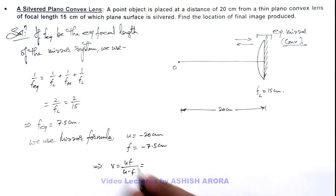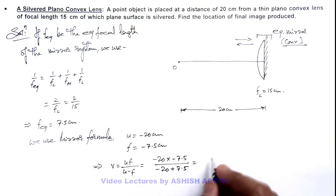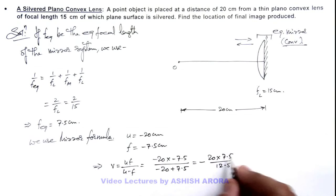If we substitute the values, this is -20 multiplied by -7.5 divided by -20 + 7.5, which is here -20 × 7.5 divided by 12.5. So this will be -12 centimeter.